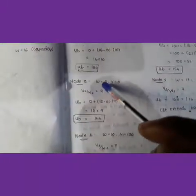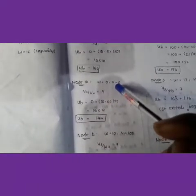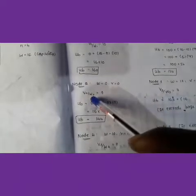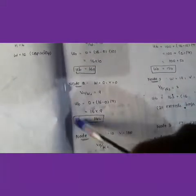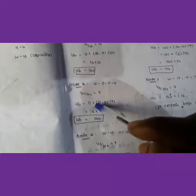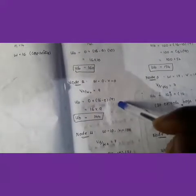For Node 2 (item 1 not selected), weight remains 0 and value remains 0. The next item's v-by-w ratio is v2/w2 = 9. Applying the upper bound formula: 0 + (16 - 0) * 9 = 144. So Node 2 has an upper bound of 144.